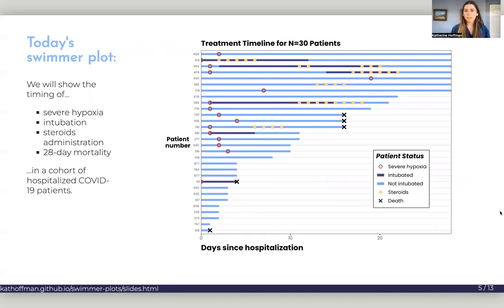For today's talk, we're going to be remaking the swimmer plot that's shown on the right, which is a treatment timeline for 30 patients. It's a cohort of hospitalized COVID patients, and we're going to use the swimmer plot to show the timing of severe hypoxia, intubation if they were intubated, steroids administration, as well as 28-day mortality.